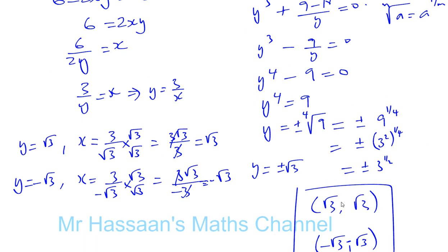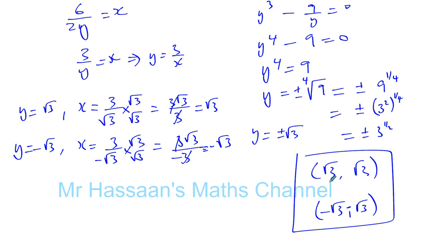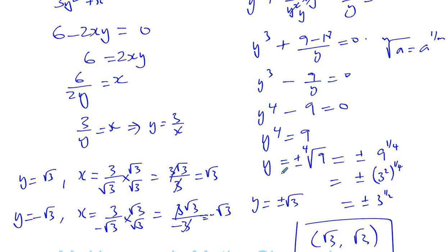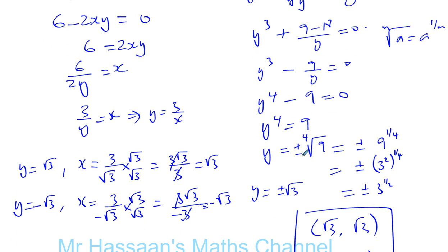Before we finish, just remember the very important things: exact form means we don't round, and points plural tells us there's more than one point, so when you get to the stage of finding the fourth root of 9, you realize it's plus or minus.